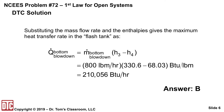Now we can take that information — M-dot of 800 pounds per hour times the difference in enthalpies H3 minus H4 — to get a little over 210,000 BTUs per hour, and that's answer B. I hope that helped clear up some of those unfamiliar terms. As always, we appreciate you allowing us to help you prepare for this exam.